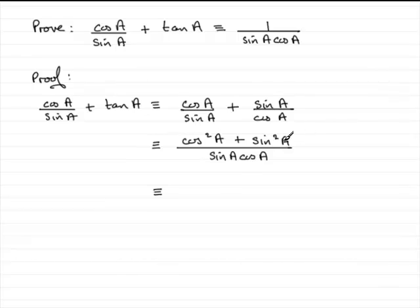So what we've got here is simply then one on the top all over sine A cos A. And so we've proved our identity.